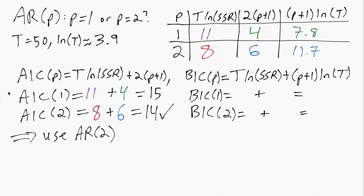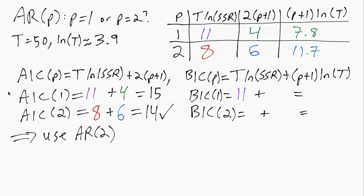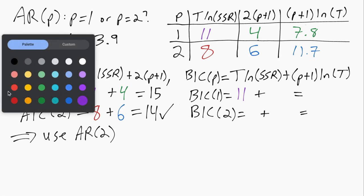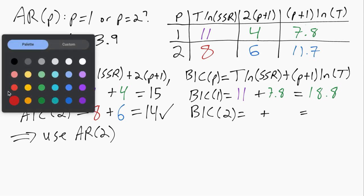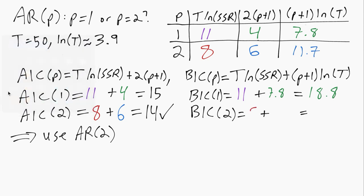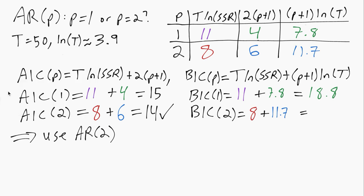So we can see that if we fill in those terms from the table. So when P equals 1 we get 11 plus 7.8, which is 18.8. And then for P equals 2 we get 8 plus 11.7, which is 19.7.